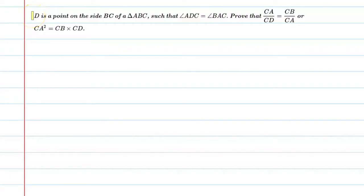Hello students, let's solve this question. D is a point on the side BC of triangle ABC such that angle ADC is equal to angle BAC.